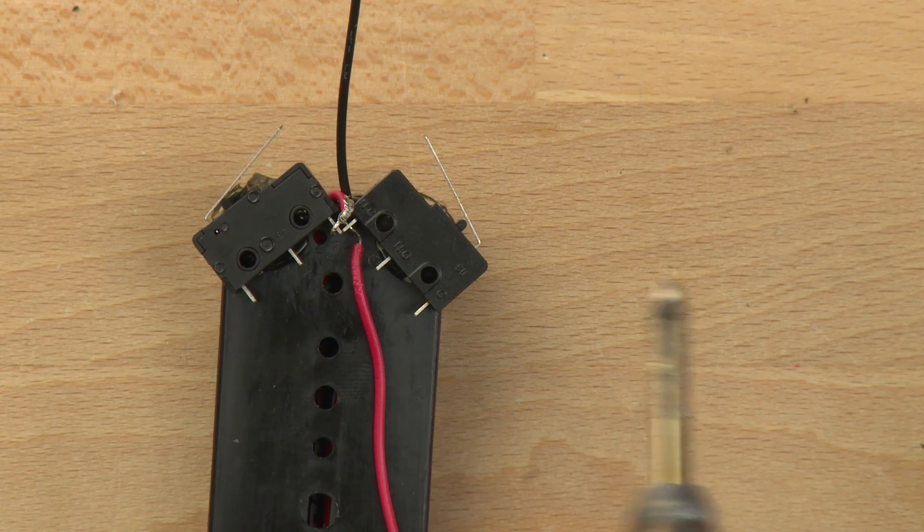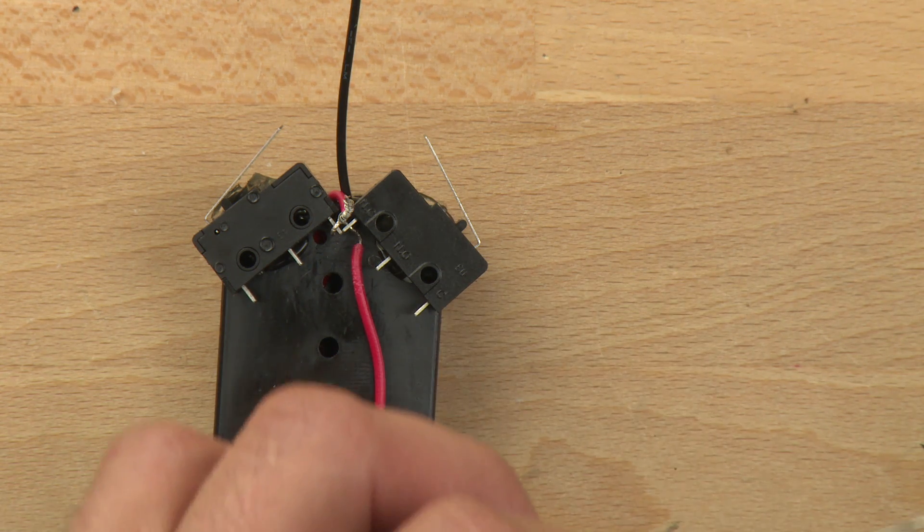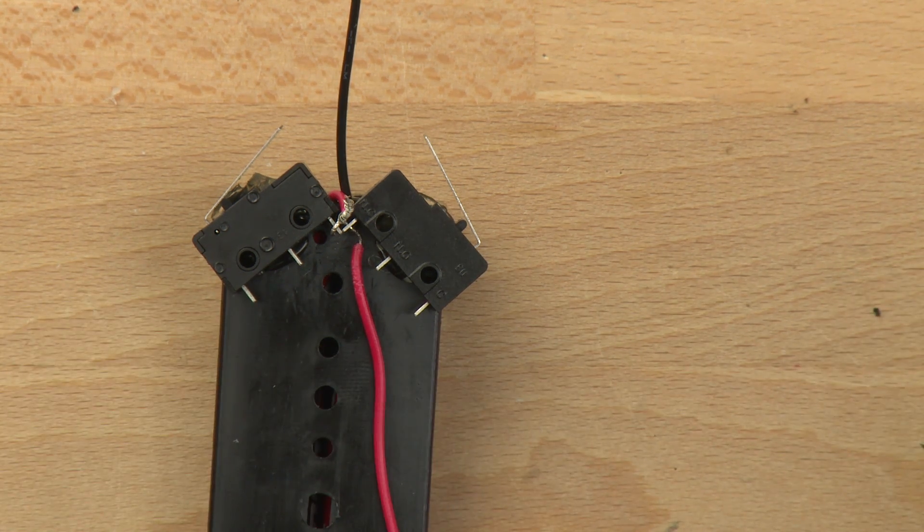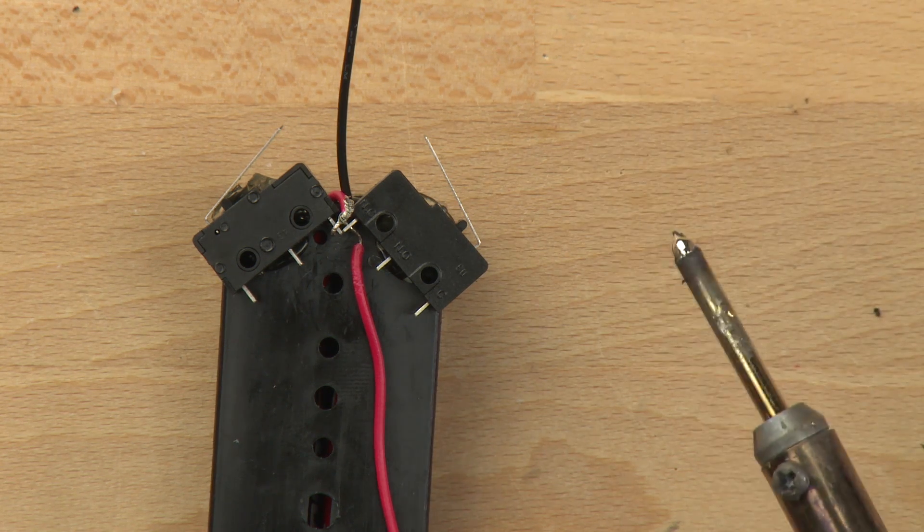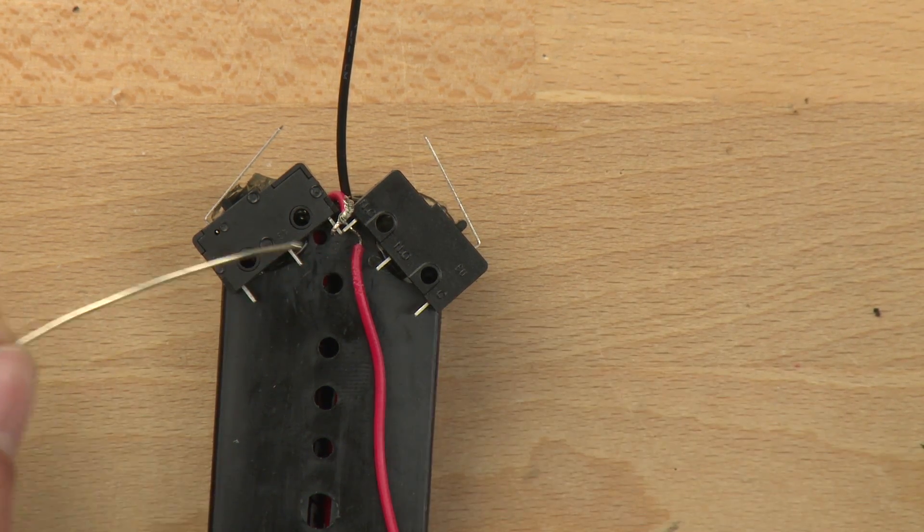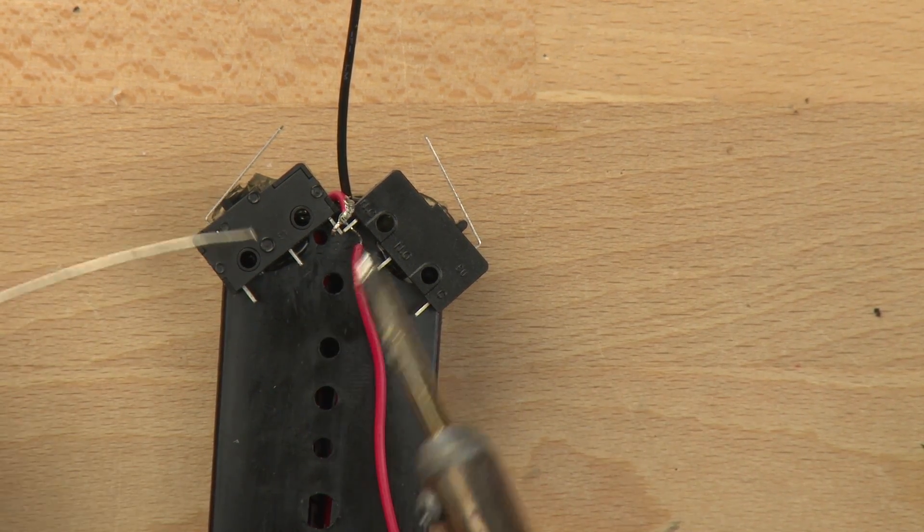So let's go ahead and do that. So we're going to take our soldering iron, make sure we tin the tip, remember. And a little bit of tin there and knock off the excess.